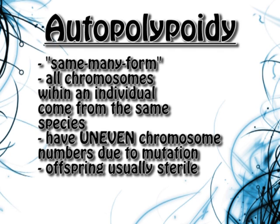So let's get into autopolyploidy. It means 'same' in any form, and basically all the chromosomes within an individual came from the same species. The end result — the offspring — has an uneven number of chromosomes due to mutation, which makes them sterile, for reasons we will get into pretty soon.